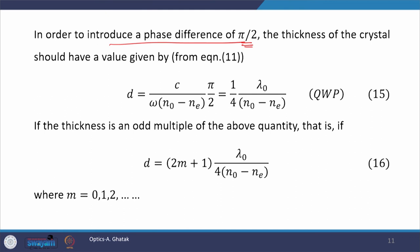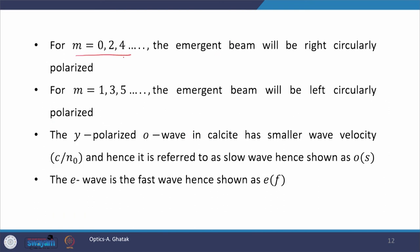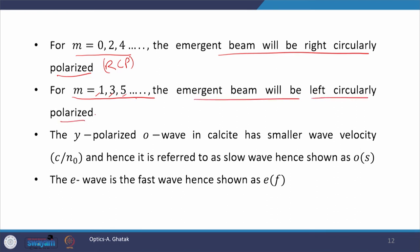If we set θ = π/2 and solve for d, we get d = λ₀ / [4(N_O − N_E)]. A crystal of this thickness is called a quarter wave plate. More generally, if d = (2m+1)λ₀ / [4(N_O − N_E)], then for m = 0 the emergent wave is right circularly polarized (RCP) when φ = π/4, and for m = 1, 3, 5, ... the emergent wave is left circularly polarized (LCP).